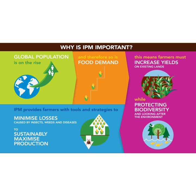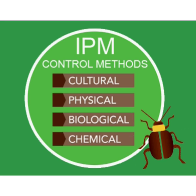Today there is an increase in global population whereas a decrease in food production because of insects, weeds, and diseases. The losses created by these can be solved by proper IPM.